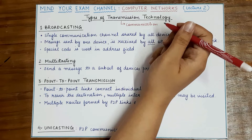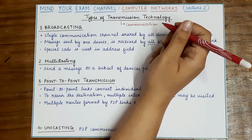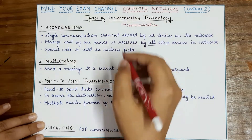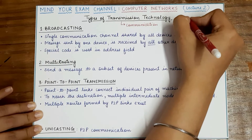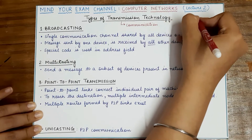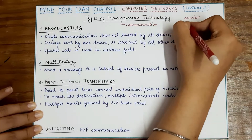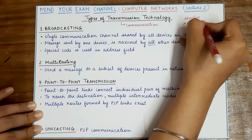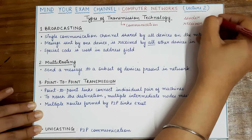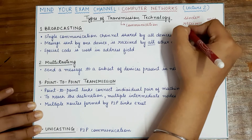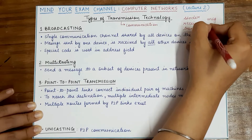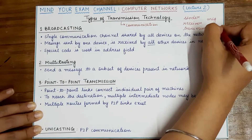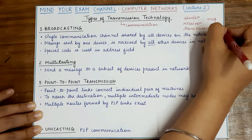The type of transmission technology can also be categorized on the basis of how many receivers are receiving the message that is sent by the sender. In any kind of communication, you will always have a sender that will send a message to the receiver via some communication or transmission media. Transmission media are also known as transmission links.